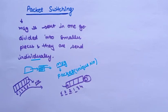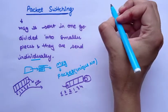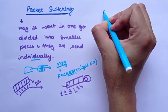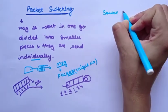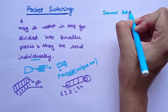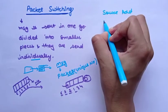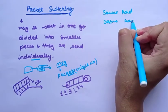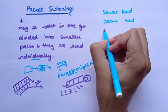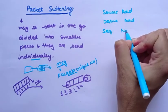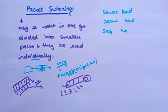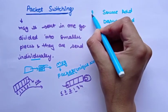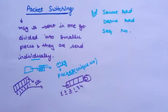Every packet contains some information in its header, such as: source address, destination address, and sequence number. These are three important things you have to remember.